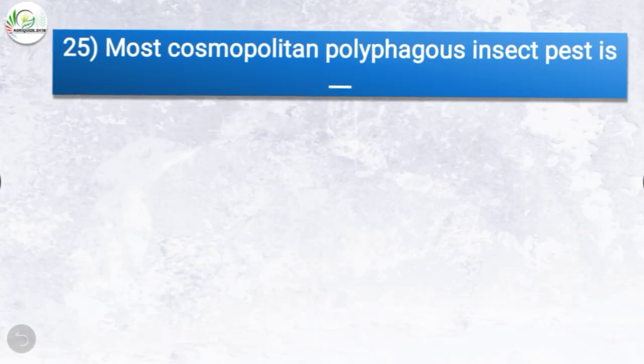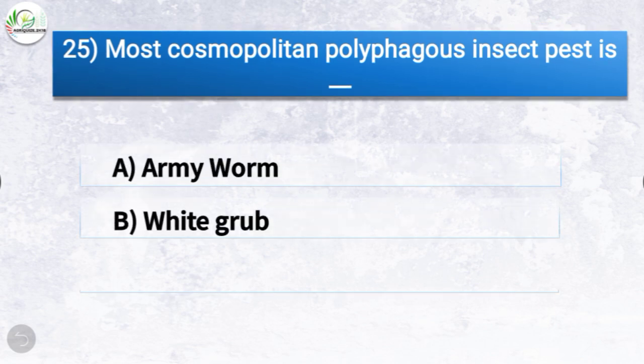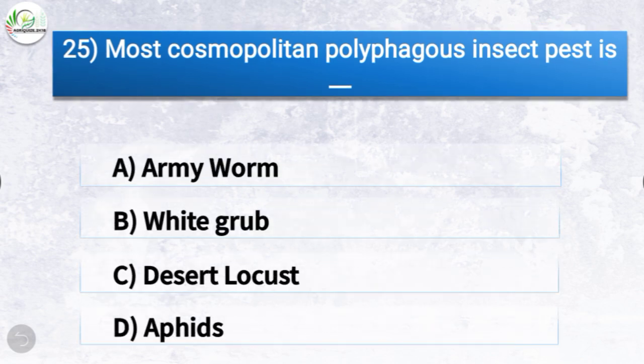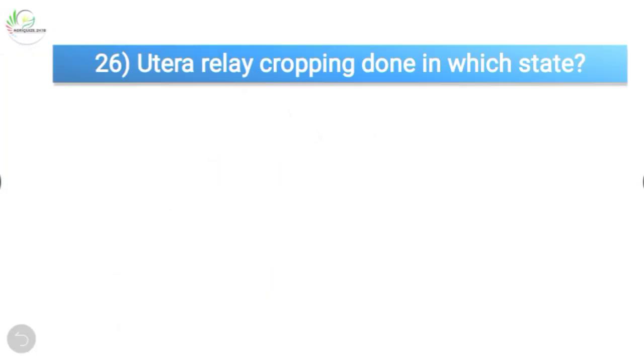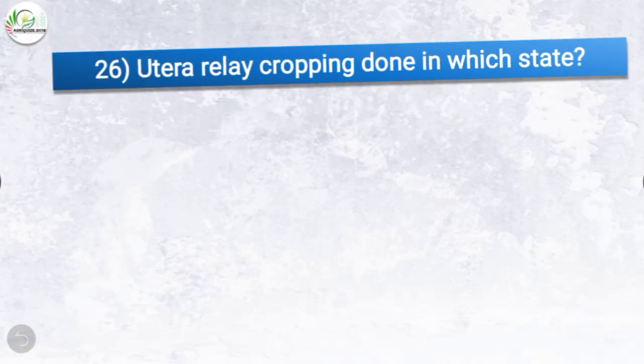Question number twenty-five: the most cosmopolitan polyphagous insect pest is which one? The options are army worm, white grub, desert locust, or aphids. The correct answer is option C, desert locust. So the most cosmopolitan polyphagous insect pest is desert locust.